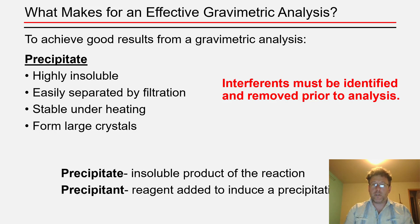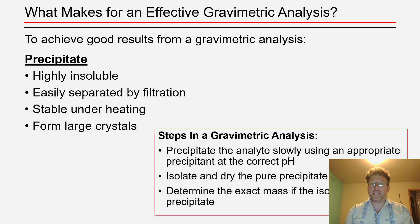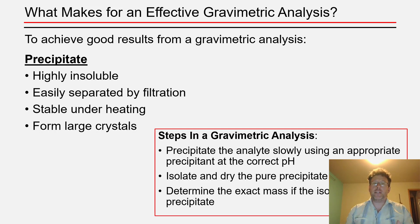Generally, all gravimetric analyses have the same basic steps. The majority of the procedure will involve a slow precipitation reaction with the reaction mixture buffered at a specific pH, which will encourage the precipitate solid crystals to grow slowly and into relatively large crystals so that they're easy to collect.